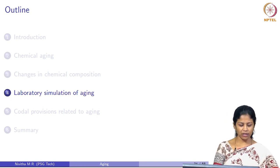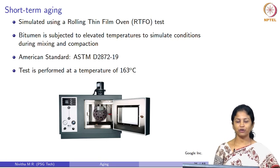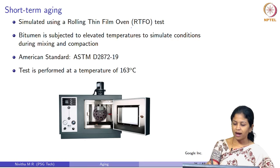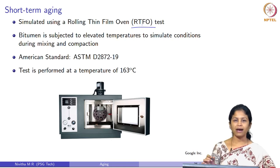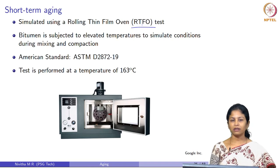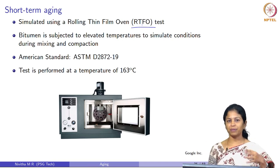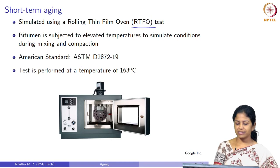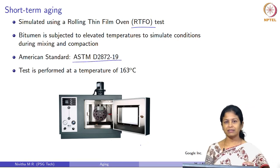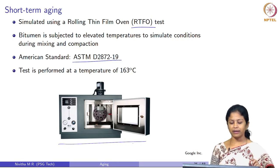First we will see the procedure available to simulate short-term aging in bituminous binders. Short-term aging is simulated using a rolling thin film oven, called RTFO. This test is used to simulate the short-term aging condition in a binder, where bitumen is subjected to elevated temperatures and the presence of oxygen. This test is performed as per American standard ASTM D2872 at a fixed temperature of 163 degrees Celsius. The equipment shown here is an RTFO equipment.